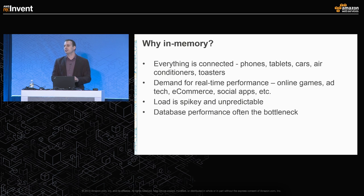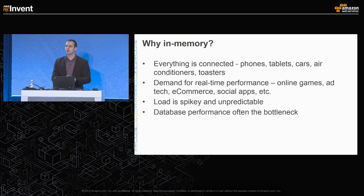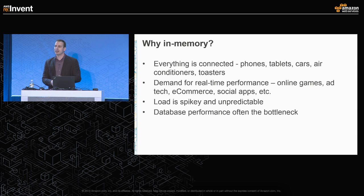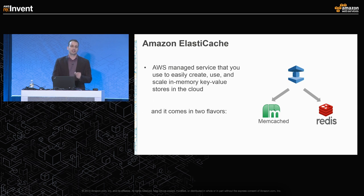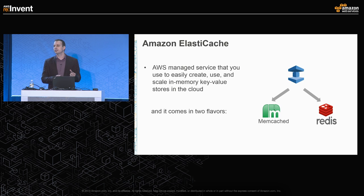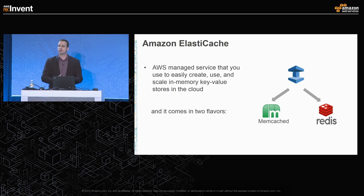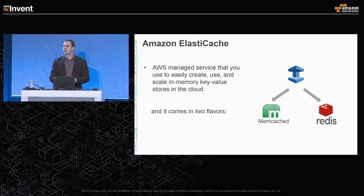Load on your application is often spiky and unpredictable — a celebrity tweets about you and you have 10 or 100 times more people checking out your app in one evening. You need to make sure your app can handle that. Amazon ElastiCache is a managed service that manages two open-source in-memory key-value stores. One difference between DynamoDB and ElastiCache is that DynamoDB was developed within Amazon, while ElastiCache takes two popular open-source technologies and provides enhancements and a management layer on top of them. It comes in two flavors: Memcached and Redis.